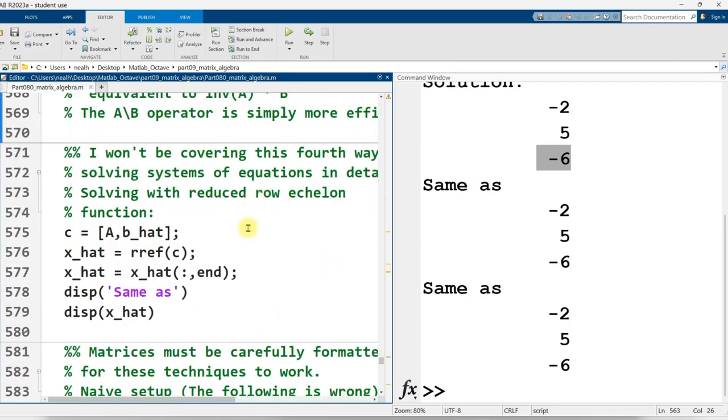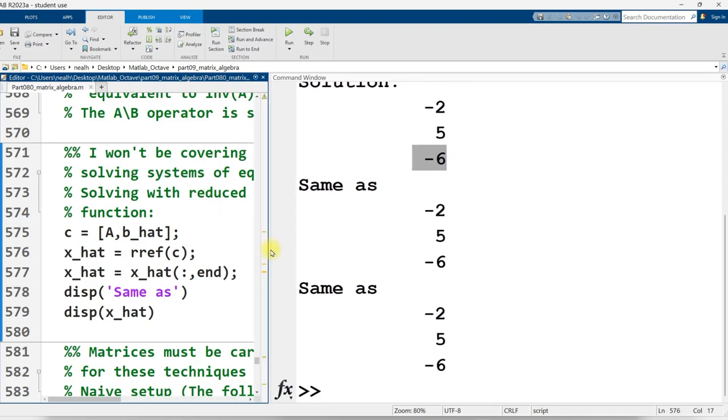Now the fourth way that I'm going to demonstrate is with the RREF function. This is the reduced row echelon form function. Now you might remember from algebra two, probably, if you're in like the American education system. So the reduced row echelon form is where you have, you've changed the coefficients of the variables in your system of equations such that in the first equation, every variable has a coefficient of zero except for one, which has a coefficient of one.